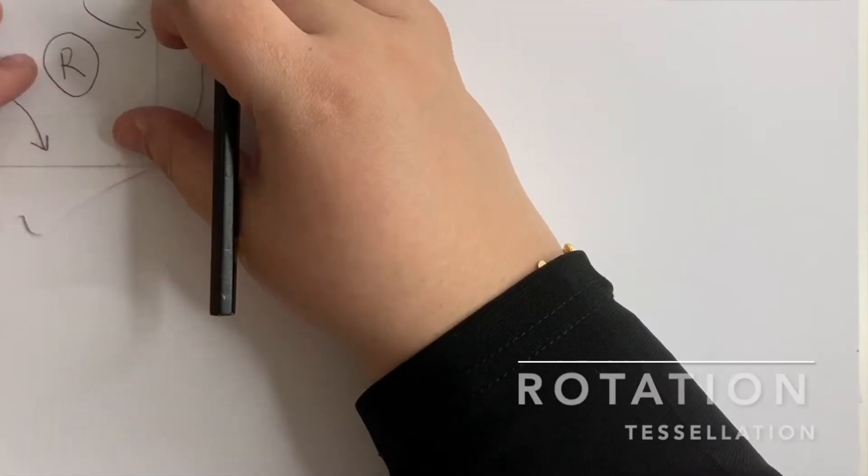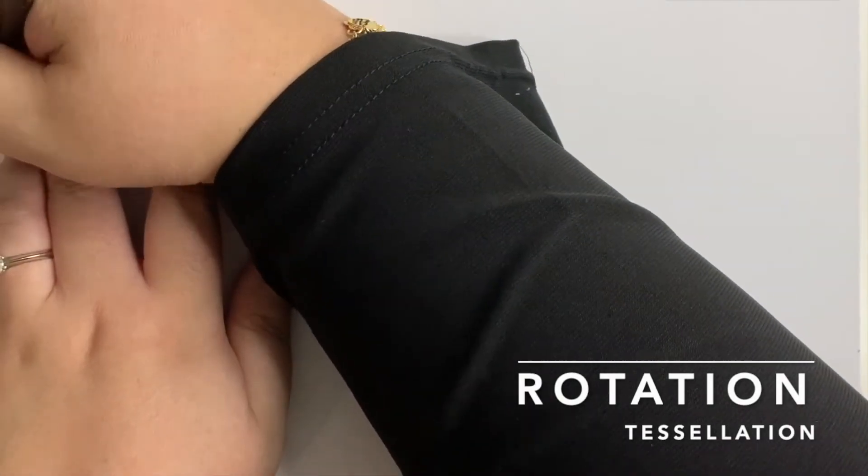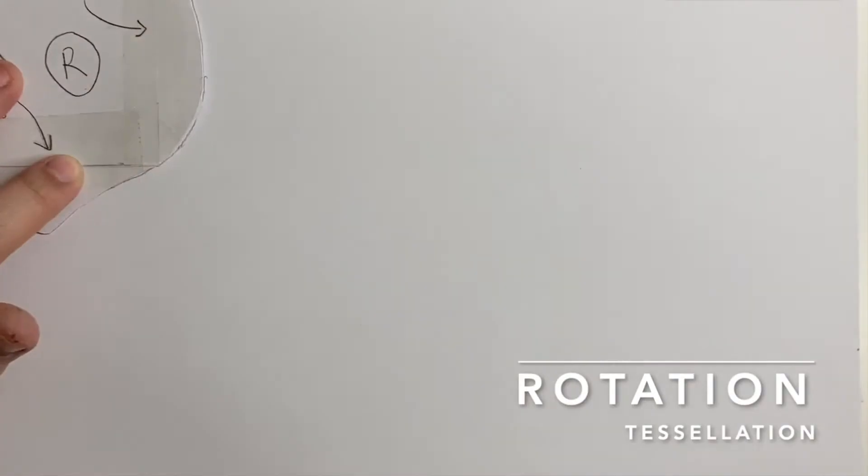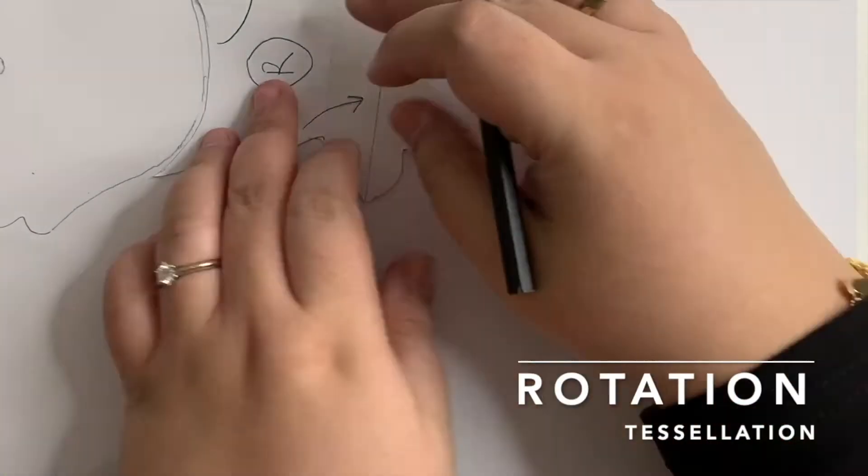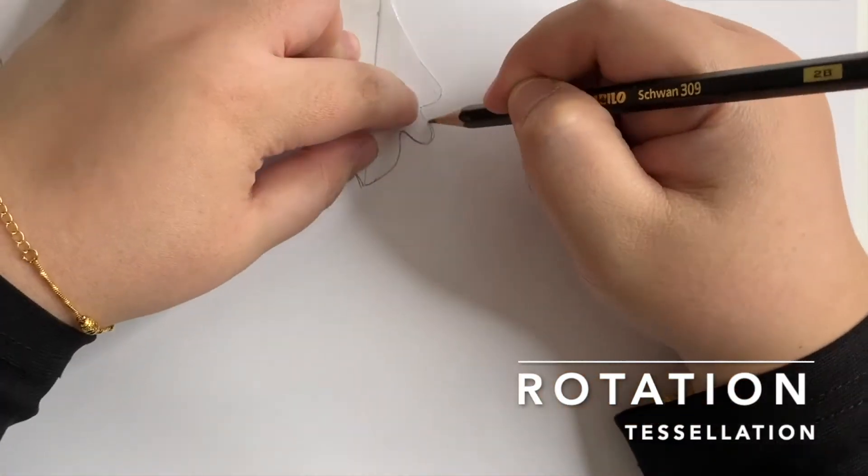Next, I'm going to show you the rotation tessellation. Take the rotation template, trace out the first shape. Then, slide and rotate until it fits the traced shape. Now, do the tracing.